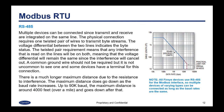There is a much longer maximum distance due to the resistance to interference. The maximum distance does go down as the baud rate increases. Up to 90k baud, the maximum distance is around 4,000 feet — which is just over a mile — and goes down after that.